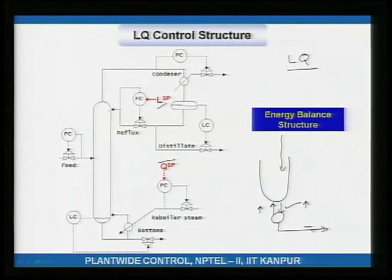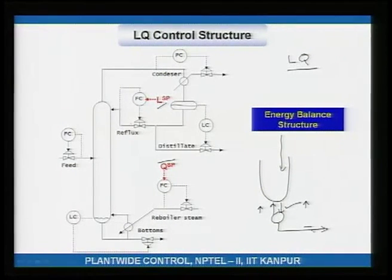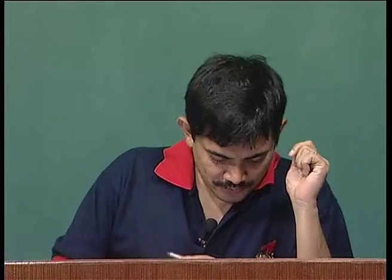In the absence of reflux and reboil, there is no separation. The operator adjusts L or Q — the reflux or reboil — to get the desired separation. This is a natural control structure most distillation columns use, with some exceptions to be discussed.